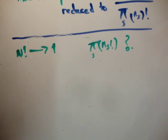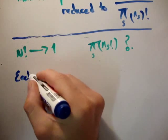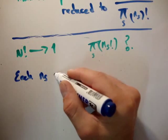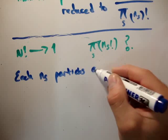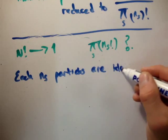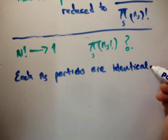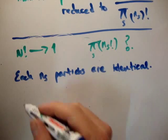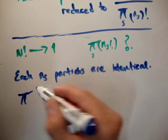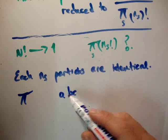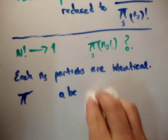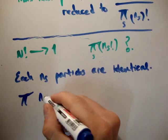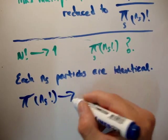What about the multiples of the N sub S factorials? What about them? Well, each N sub S particles are identical. So we know there's only one way of choosing them. So instead of having A, B, C, and then choosing A, then B, then C, or C, then B, then A, or whatever, there's only one way of choosing it. So the whole pi N sub S factorial also goes to 1.